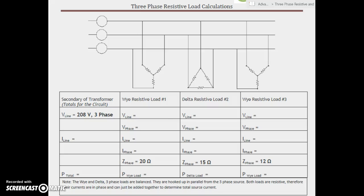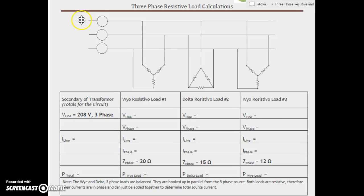All right guys, this is our third three-phase resistive load calc. This one is running off of 208V, so we've got line 1 here, line 2, and line 3, and we've got 208 volts three-phase coming into each of these circuits. That's our line voltage.